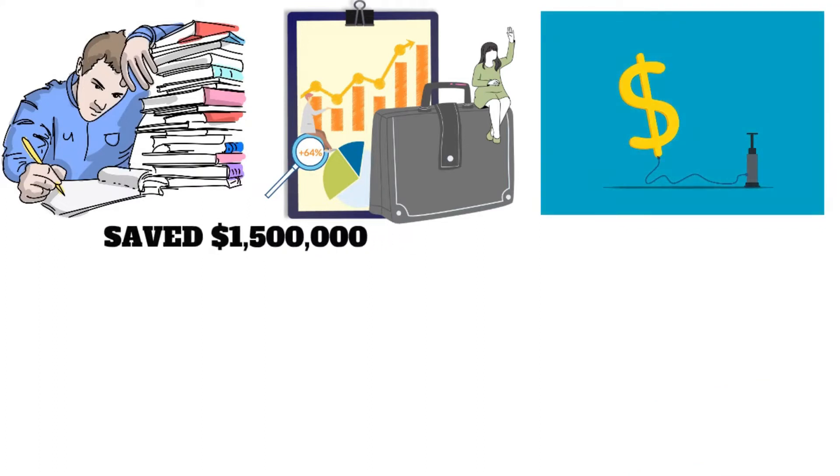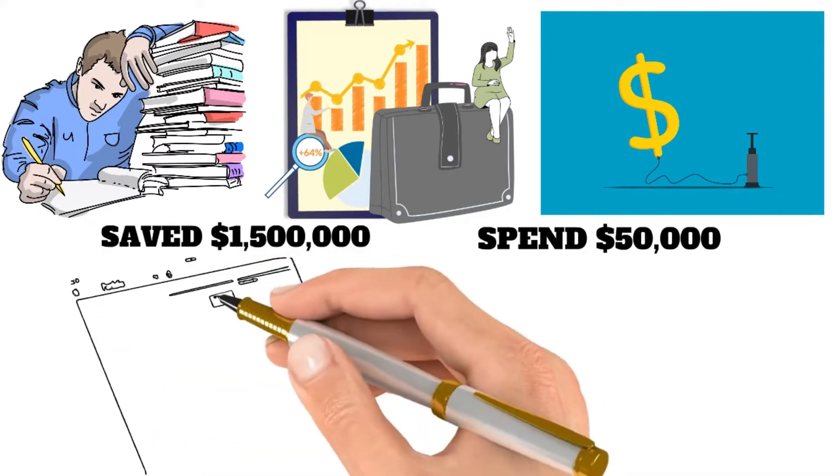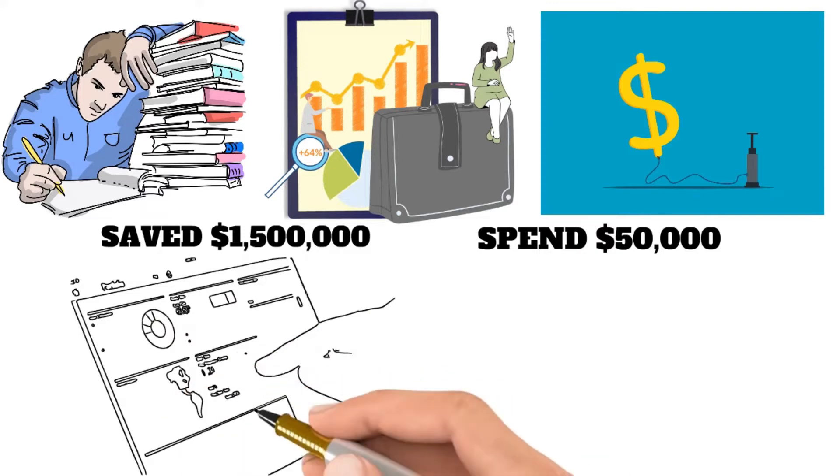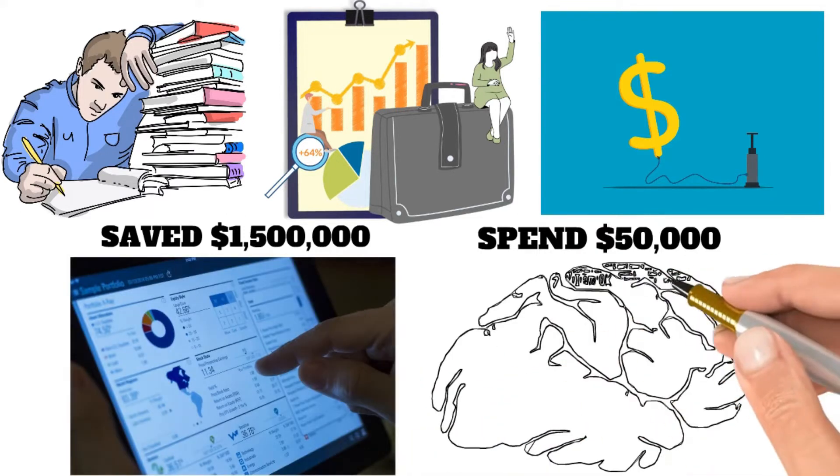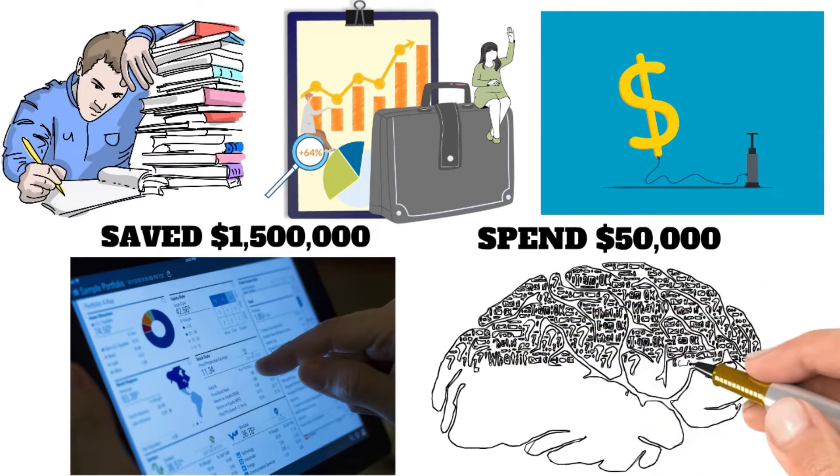If you have saved up $1,500,000 by the time you retire, you should be able to spend $50,000 in your first year of retirement and a bit more each year after that, for the next 30 years while still having some money left over in your investment portfolio.